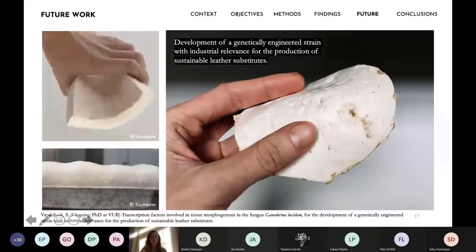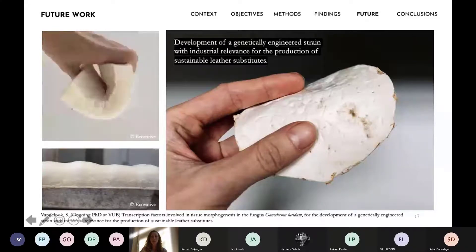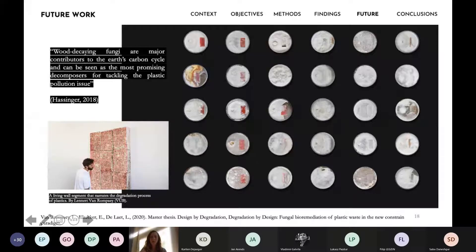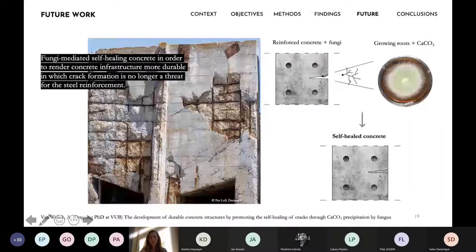The second is that fungi can be seen as one of the most promising decomposers to tackle plastic waste issues. The implementation of biodegradation of plastic with fungi in material application might also be a promising future part. And then finally, we are also investigating fungi-mediated self-healing of cracks in concrete.